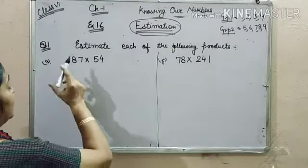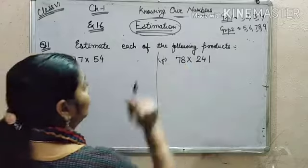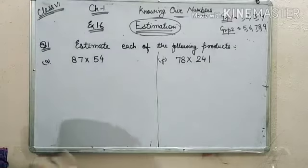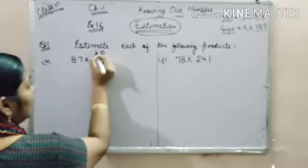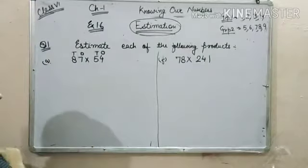In problem 1, it is given: estimate each of the following products. The rule is the same. We have to find the smaller number and the highest place of the smaller number.